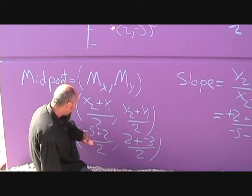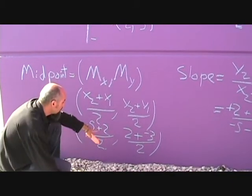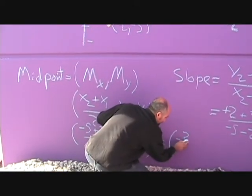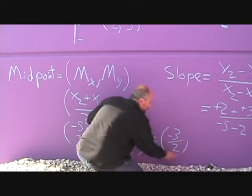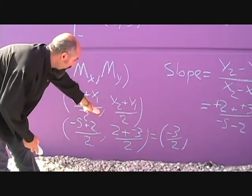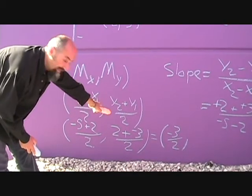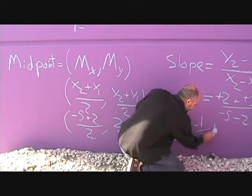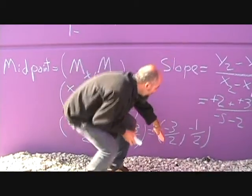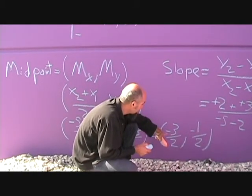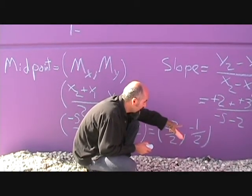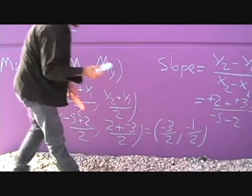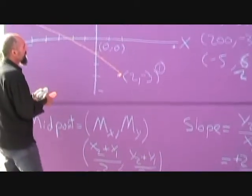We got negative 5 plus 2 is negative 3 divided by 2. For the y's it's 2 plus negative 3 which is negative 1 divided by 2. So the midpoint for this line is going to be negative 3 over 2 and negative 1 over 2. Negative 3 over 2 is negative 1 and a half.